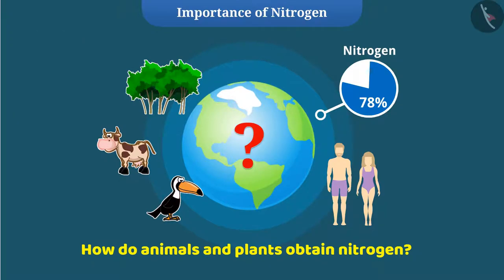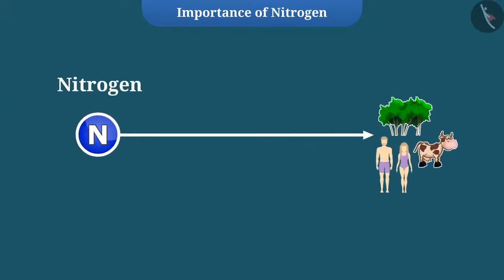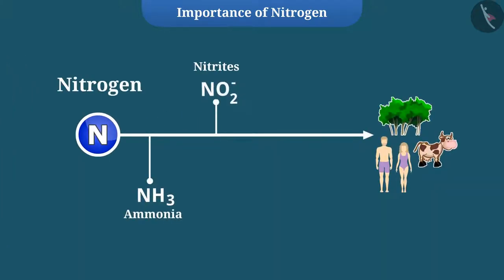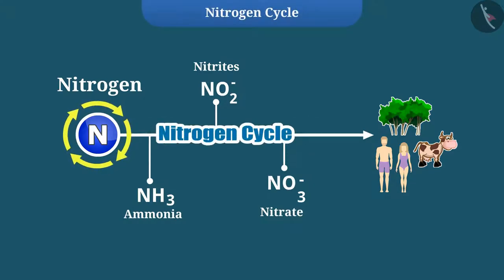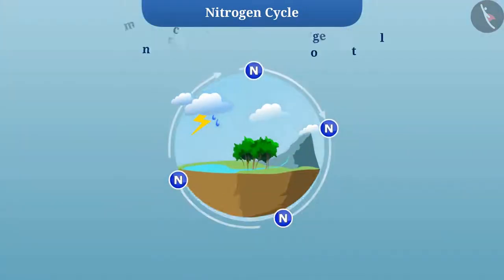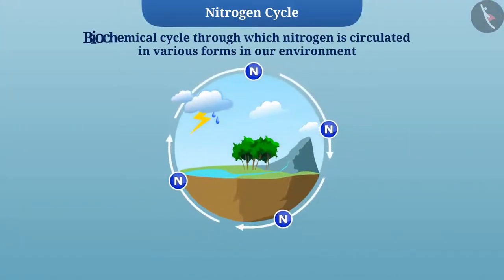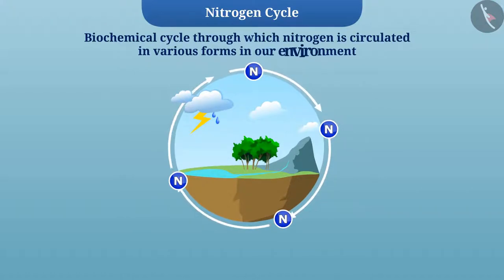Animals and plants obtain nitrogen in usable forms such as ammonia, nitrates, and other usable forms of nitrogen with the help of the nitrogen cycle. Nitrogen cycle is a biochemical cycle through which nitrogen is circulated in various forms in our environment.